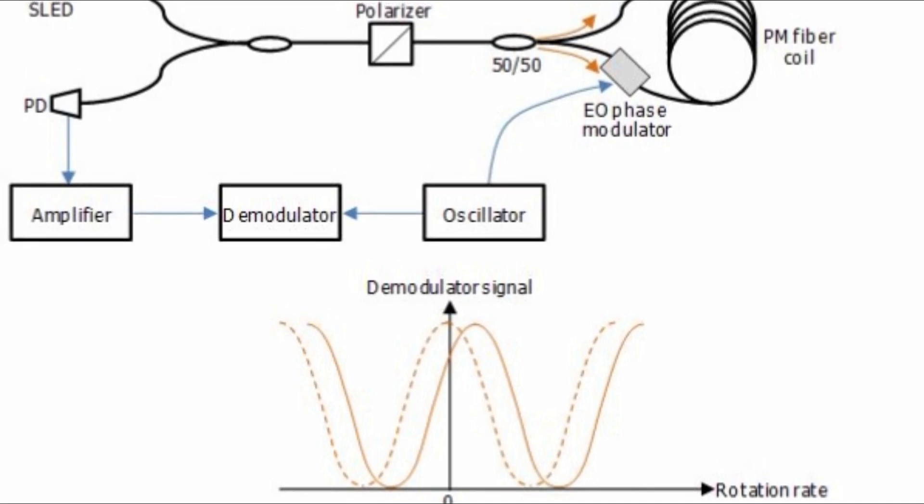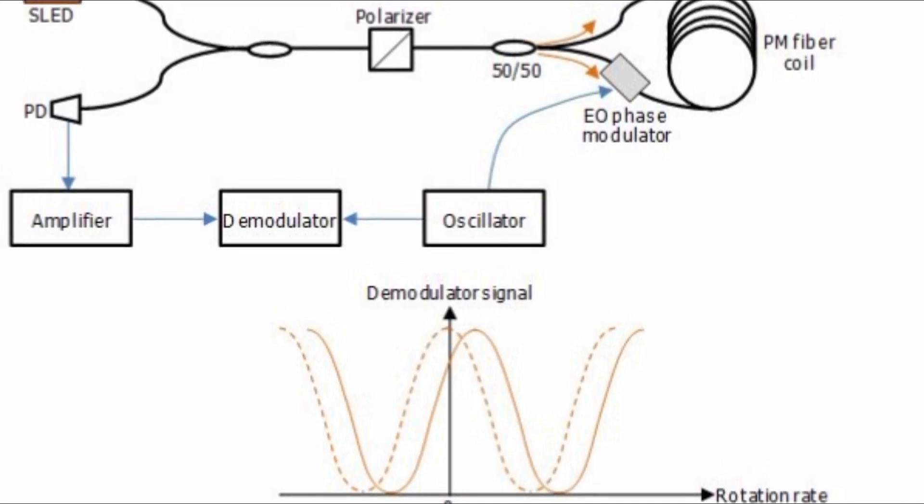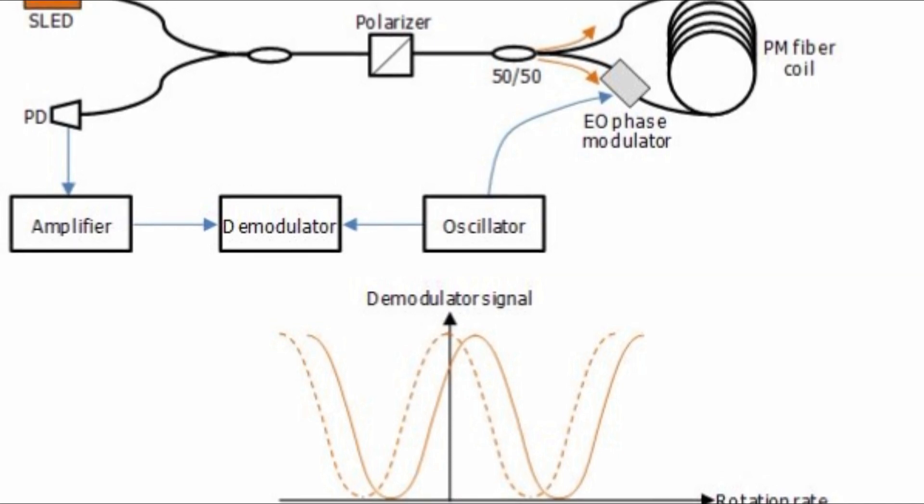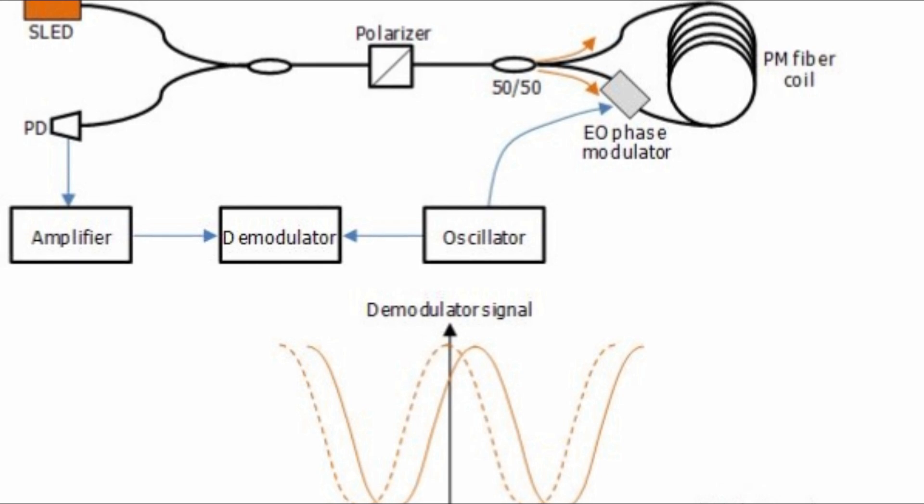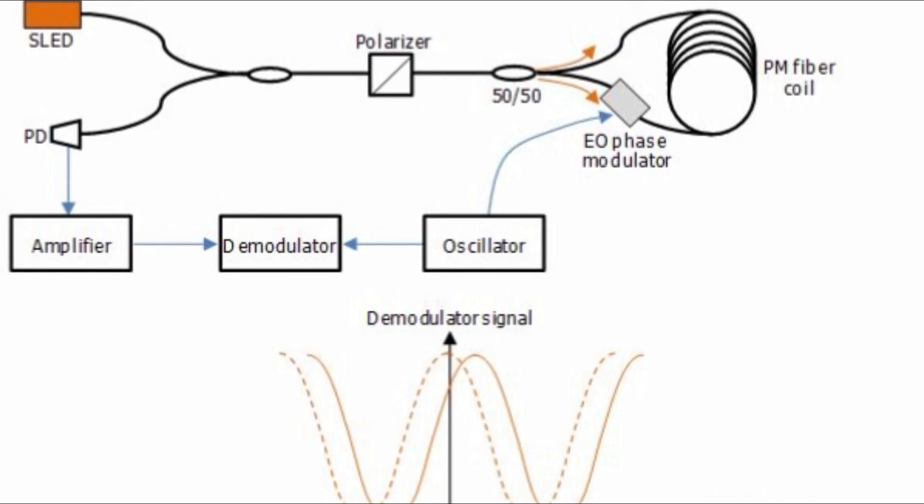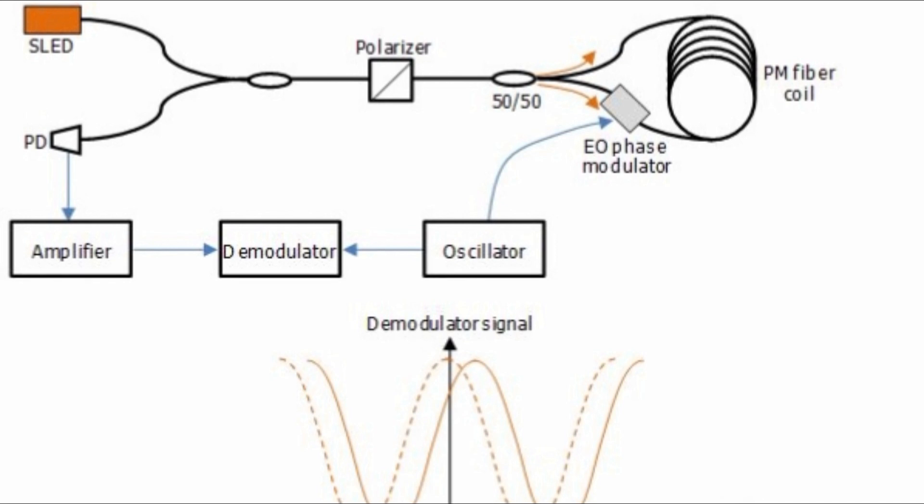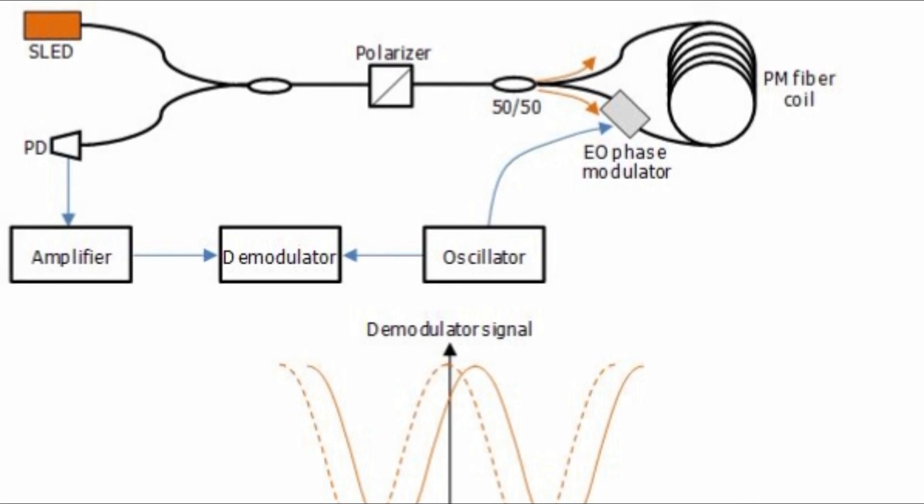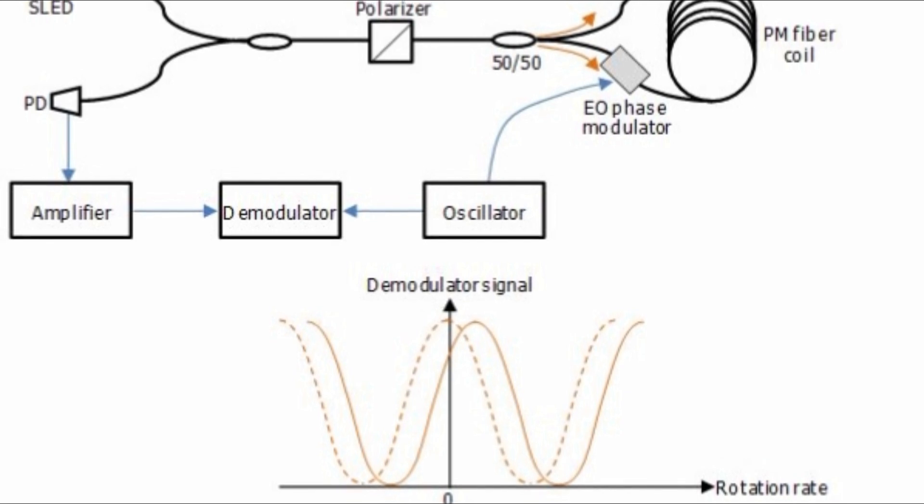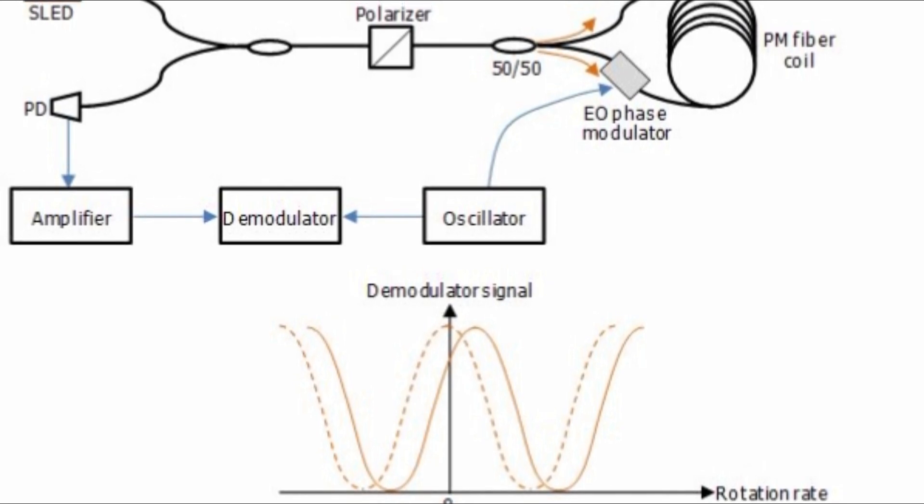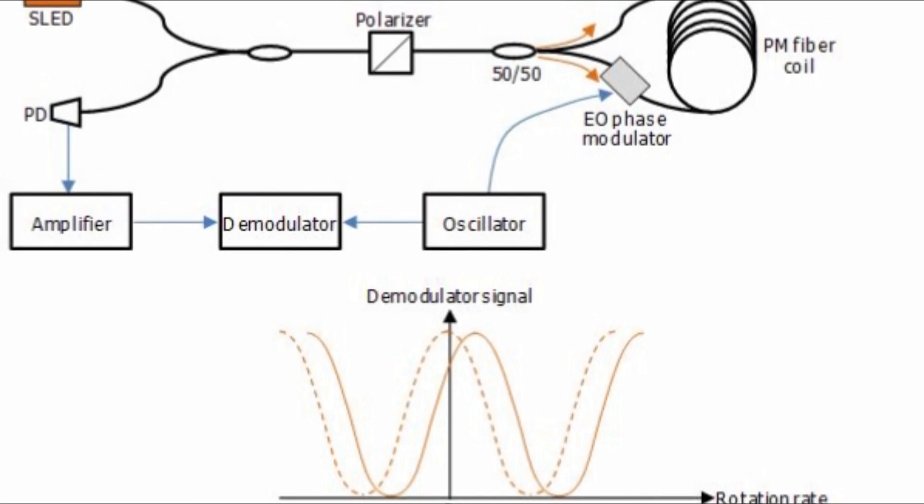Fiber optic gyroscope requires calibration. This is conducted during production and may increase production lead time. Some fiber optic gyroscope designs are somewhat sensitive to vibrations. However, when coupled with multiple axis fiber optic gyroscope and accelerometers, the impact can be mitigated.